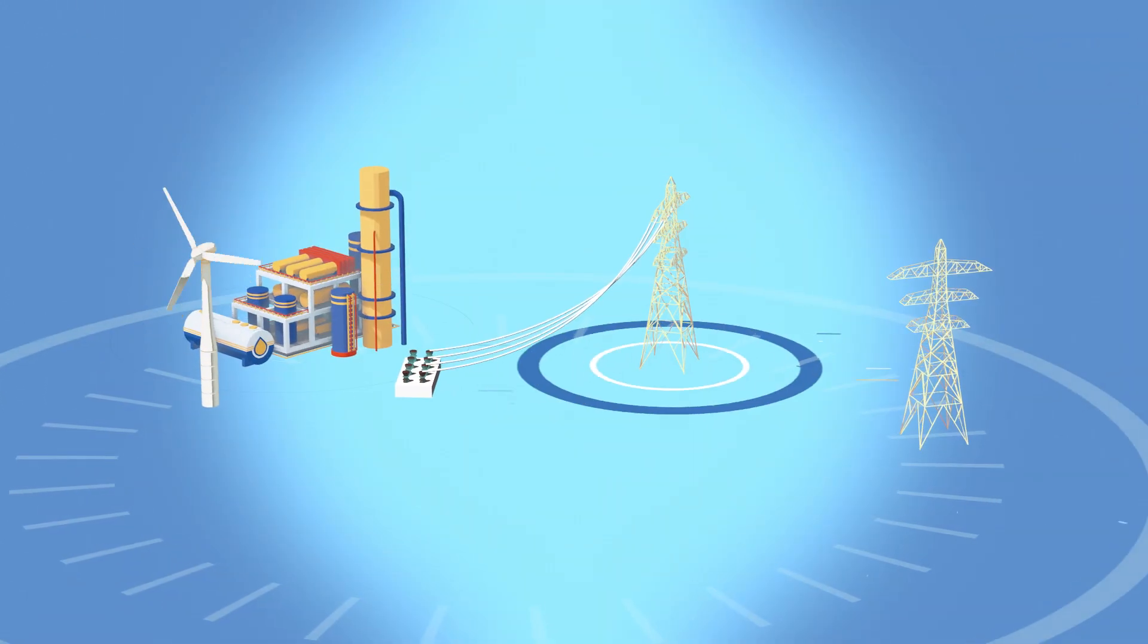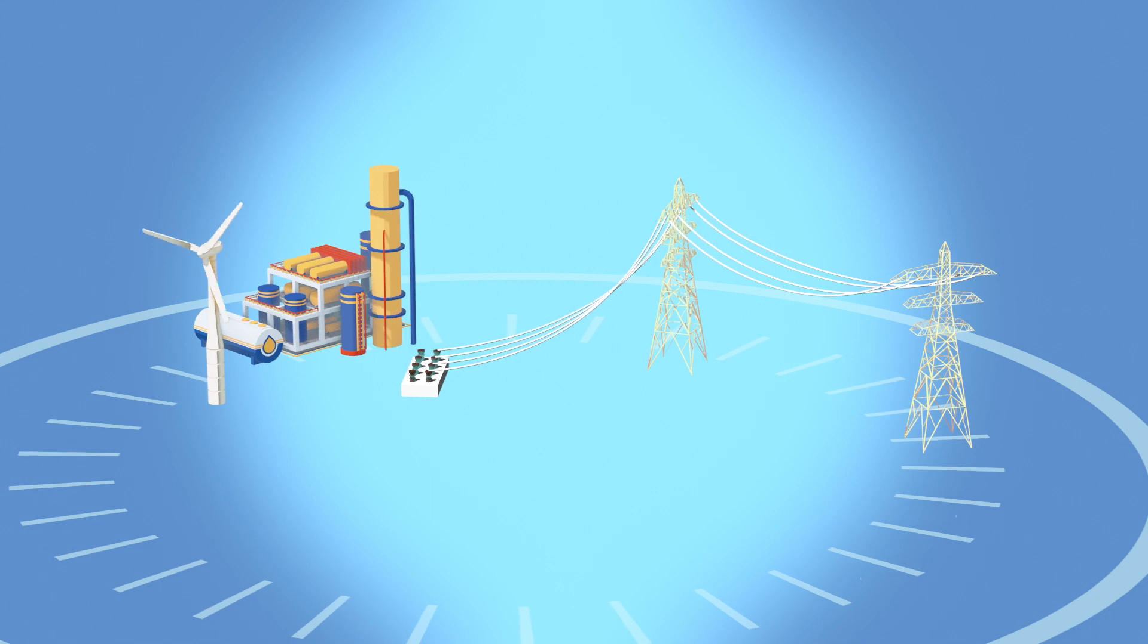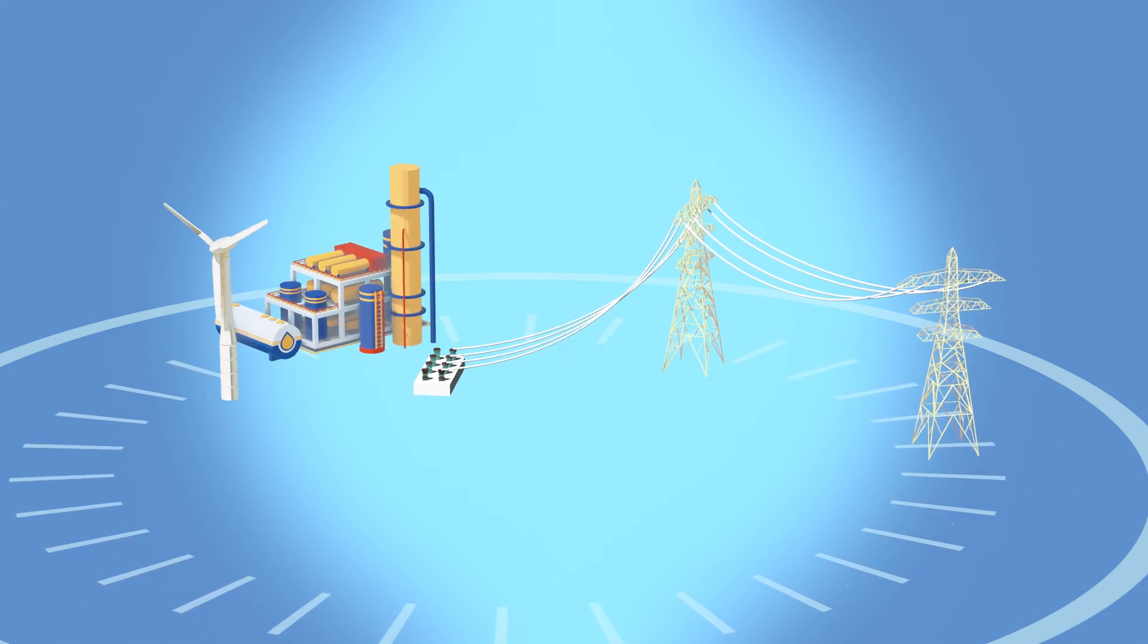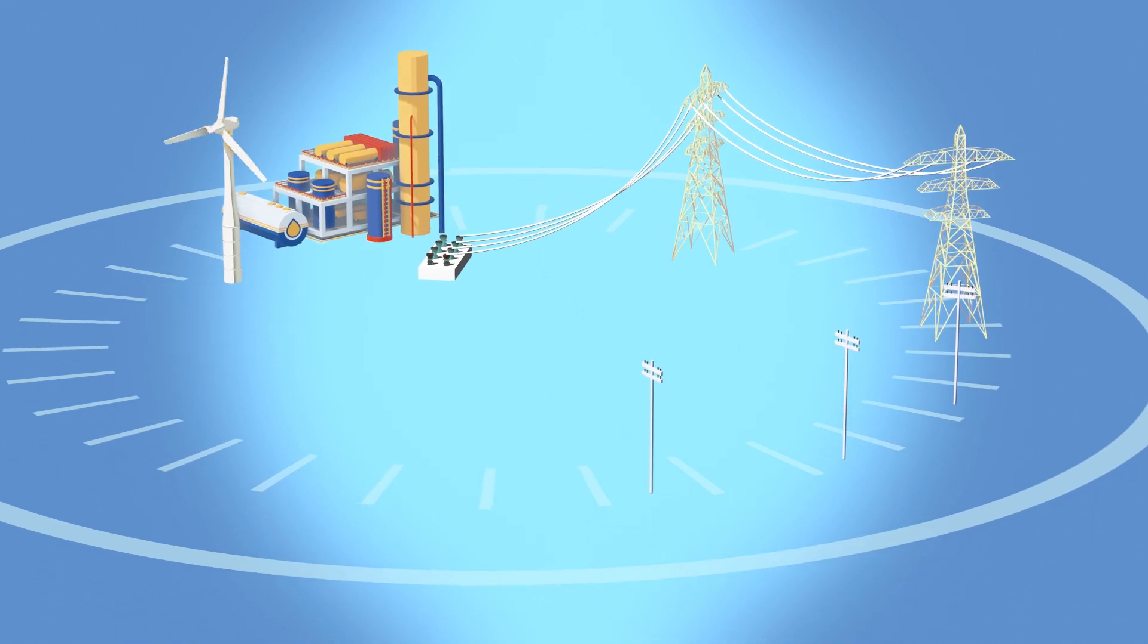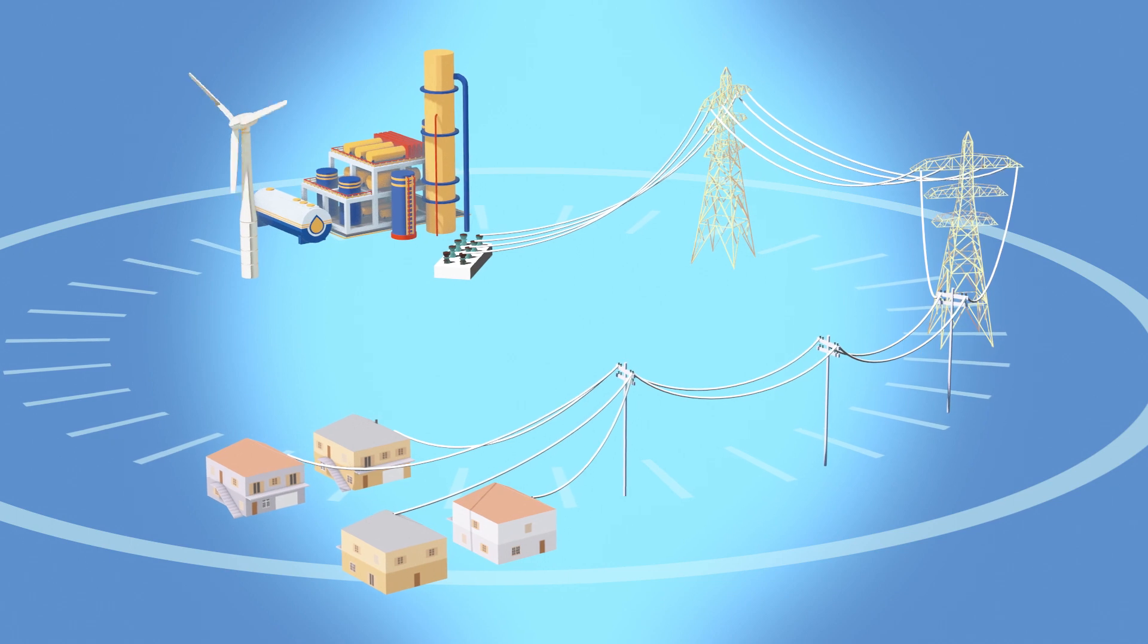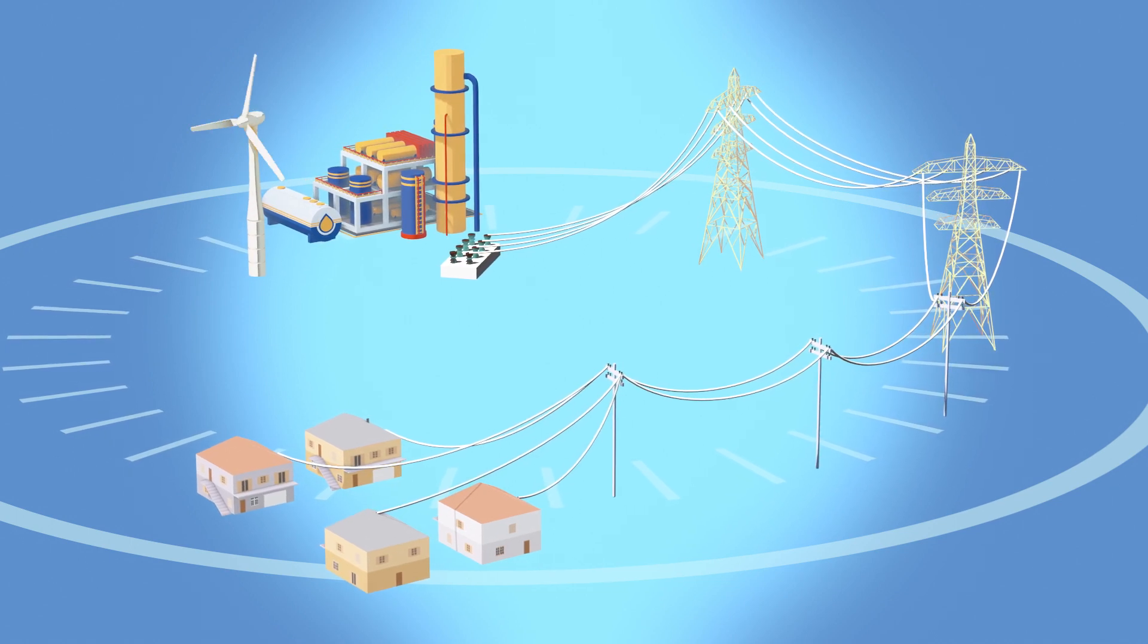All forms of electricity are used depending on supply and demand and what is available. The grid is operated by regional balancing authorities who work together to ensure that the demand for power and the available power is always reliable and in balance.